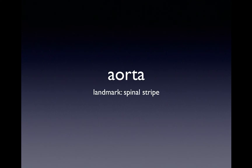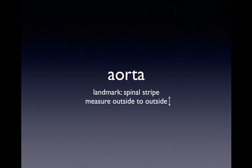Let's start with aorta. A couple of important points about the aorta scan. One is that you want to make sure you're looking for the landmark, which is the spinal stripe. The aorta sits on top of the spine, so you should always make sure you see the spine in the background — otherwise you're just looking at a circle, and there are lots of circles in the abdomen. Make sure you measure outside to outside if you see an abnormal aorta. Most abdominal aortic aneurysms are in the distal, infrarenal portion, so scan all the way down.